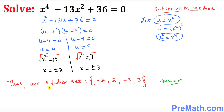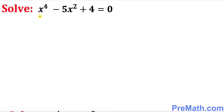Our solution set is these numbers: negative 2, positive 2, negative 3, and positive 3. As you can see, we got 4 solutions, and since our highest degree is 4, at most we're going to get 4 solutions. Now we're going to focus on our next example.